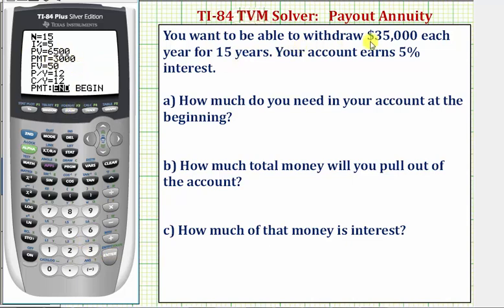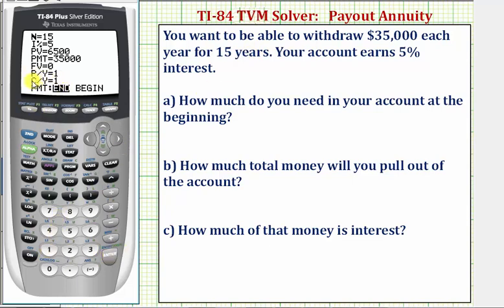The payment is going to be $35,000, so we enter 35,000. The future value after the 15 years will be zero. Payments per year — again that's one per year — so we enter one for P/Y. This automatically changes the compounds per year to one, which again we're assuming is correct.